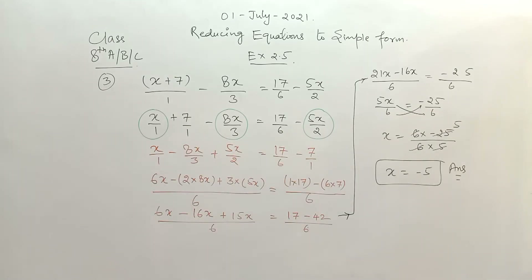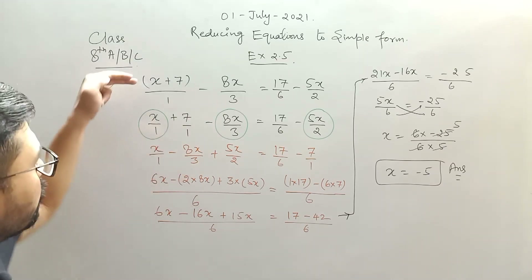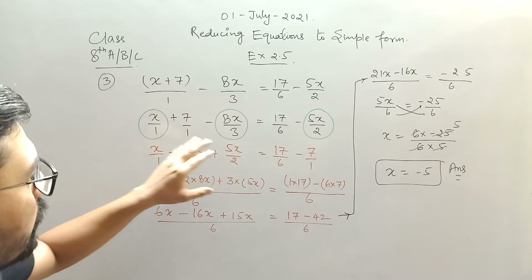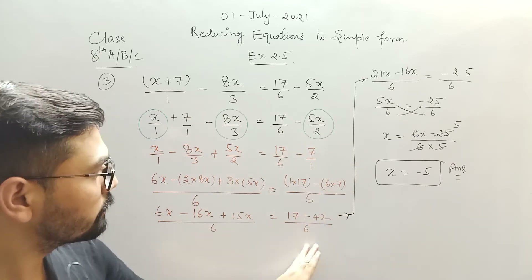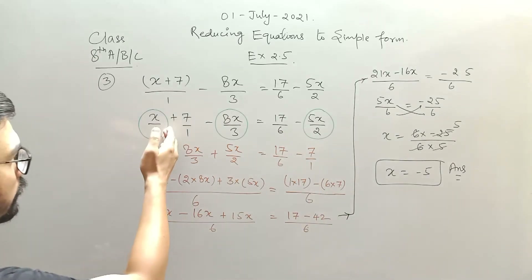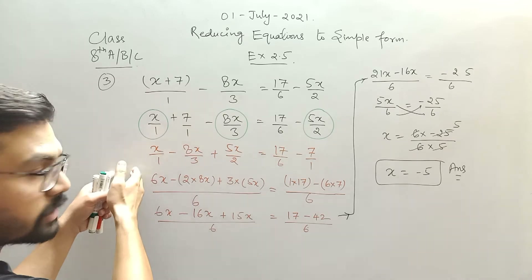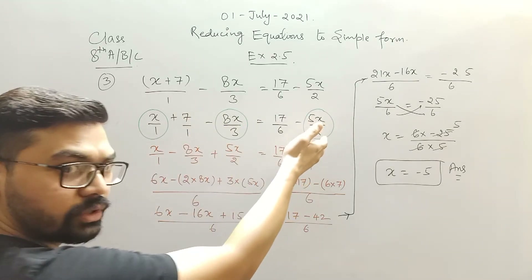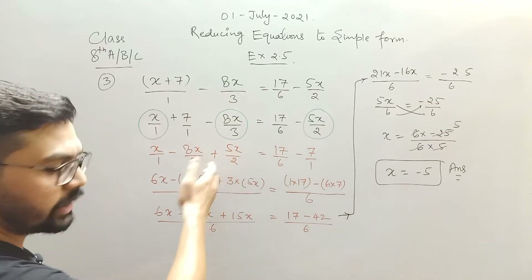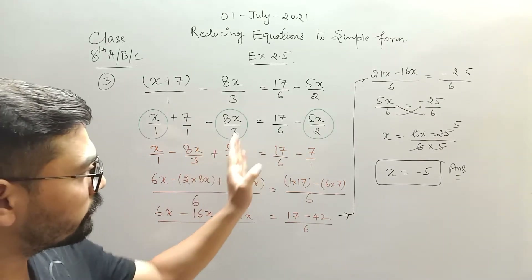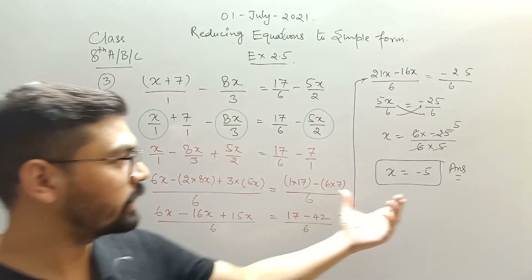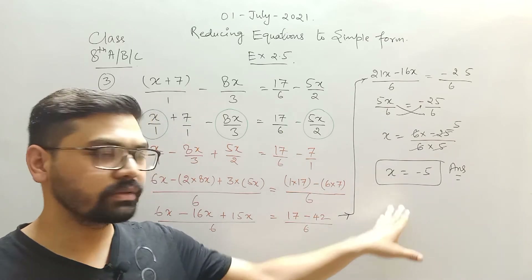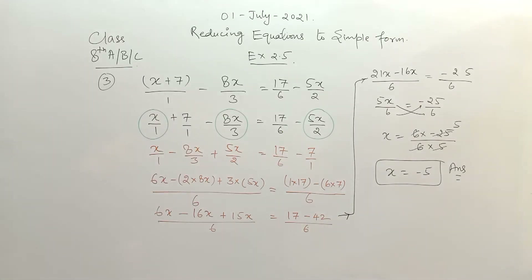Note it down. First separate out the constant values and the variables, then club all the variables on one side and constant values on the other side. You clubbed variable terms in the LHS and transposed terms from RHS to LHS. Similarly, you clubbed constant values on the RHS. Then solve for x and you get x equals minus 5, which is the simplest form.